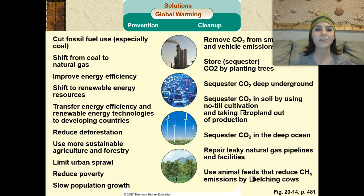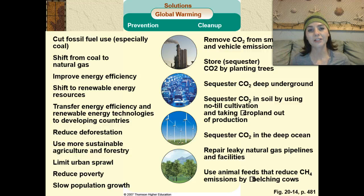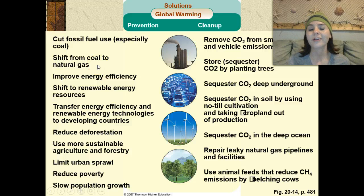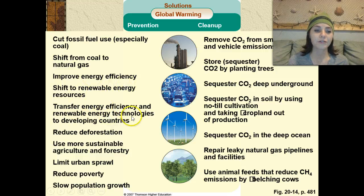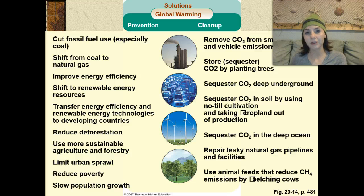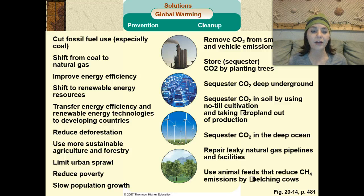As for solutions, we have prevention and cleanup — and prevention is obviously going to be much easier than cleanup. Preventative measures include: cutting fossil fuel use, especially coal; shifting from coal to natural gas, though there are many issues with natural gas as well; improving energy efficiency; shifting to renewable energy resources such as wind turbines; transferring energy efficiency and renewable energy technologies to developing countries; reducing deforestation; using more sustainable agricultural and forestry practices; limiting urban sprawl; reducing poverty; and helping slow population growth.